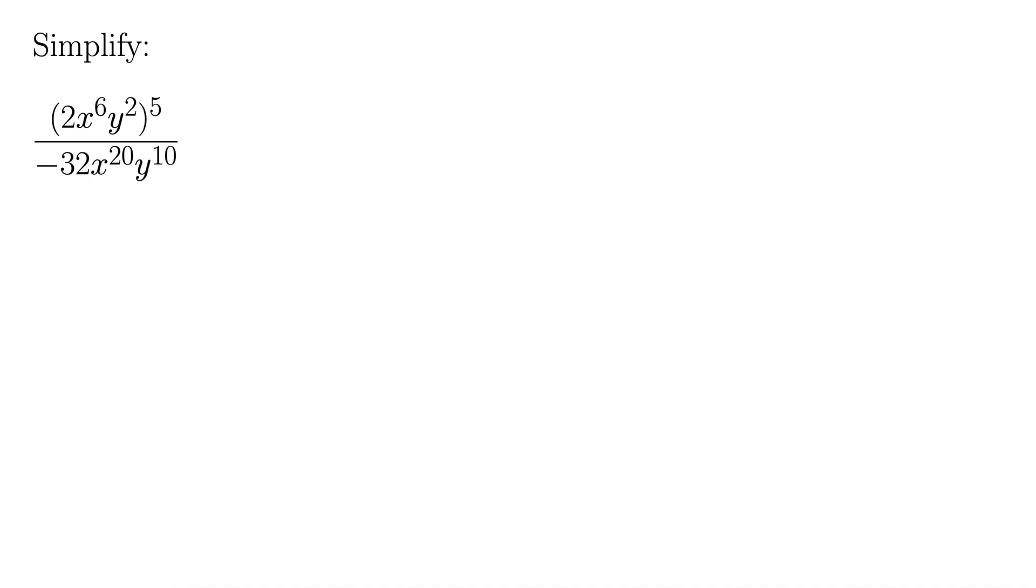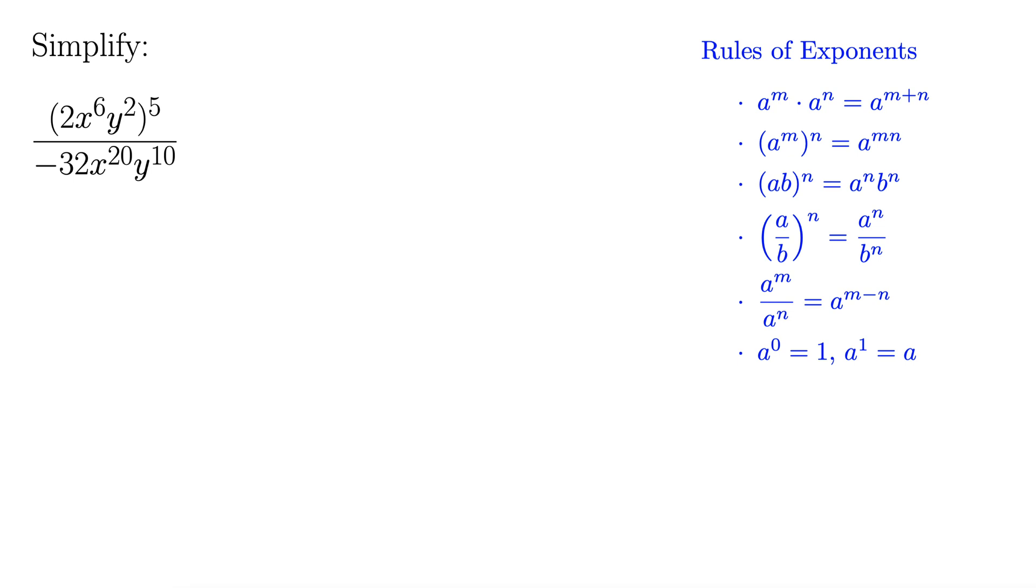Okay, so we'll need our rules of exponents. Let's bring those up. The first thing that jumps out to me here is that we have this 5 hanging out here in the front. We need to deal with that so that we can use other properties of exponents and simplify this out. So let's take care of that first. So I'm thinking we'll use this property here which tells us what to do when we have different things inside the parentheses but a single exponent outside. Alright, so that tells us that this 5 is going to go through to each one of these terms.